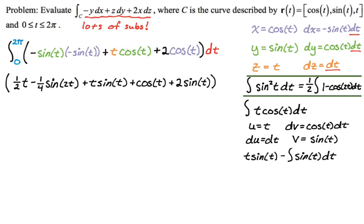And then if we just integrate two cosine of t, we get two sine of t. All of this is going from zero to two pi.